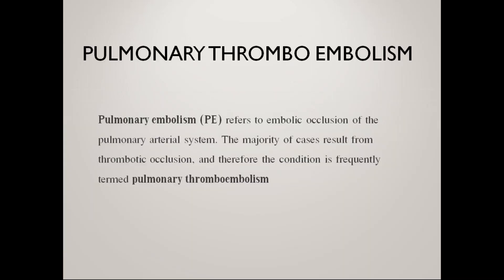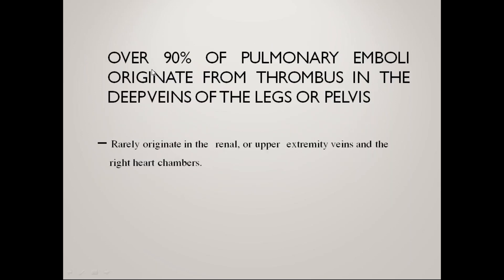Pulmonary embolism refers to embolic occlusion of the pulmonary arterial system. The majority of cases result from thrombotic occlusion, and therefore the condition is frequently termed pulmonary thrombo-embolism. Over 90% of pulmonary emboli originate from thrombus in the deep veins of the legs and pelvis. Rarely, it originates in the renal or upper extremity veins or the right heart chambers.